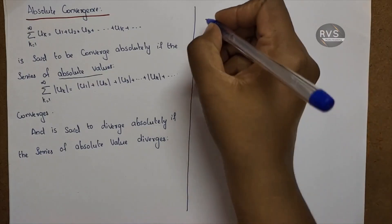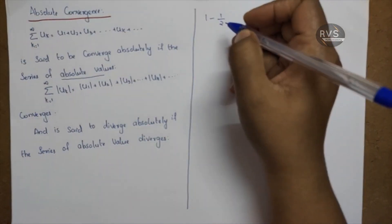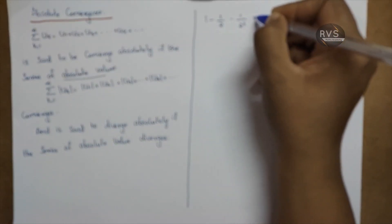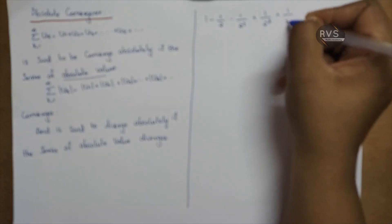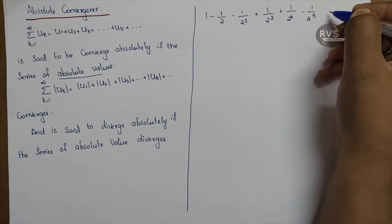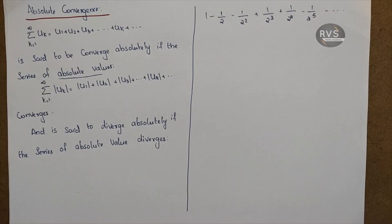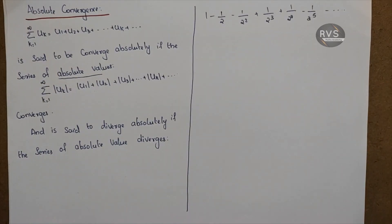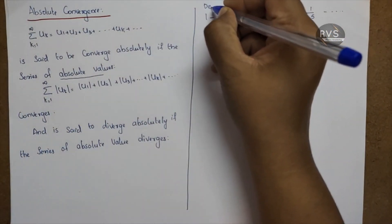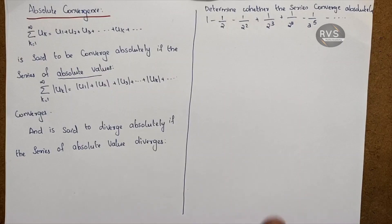Consider the series: 1 minus one-half plus one-quarter minus one-eighth plus one over two-to-the-fourth minus one over two-to-the-fifth, and so on. This is an alternating series — plus, minus, plus, minus. We will use the Leibniz test on this alternating series and determine whether it is convergent absolutely.